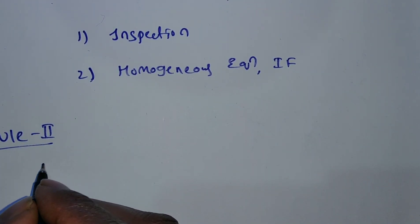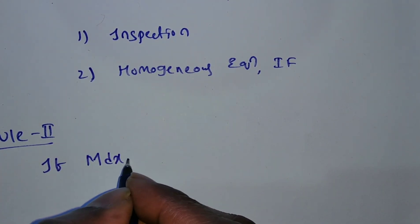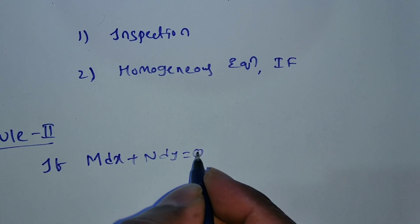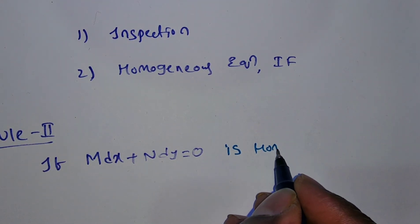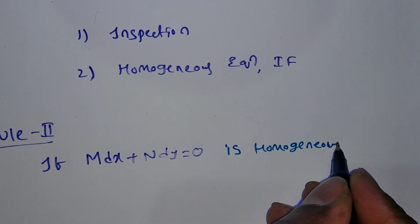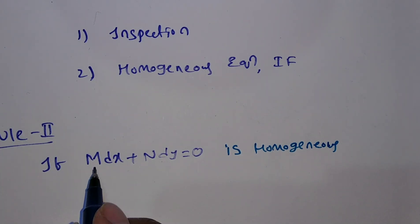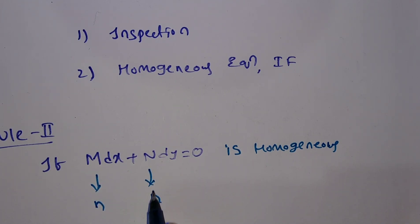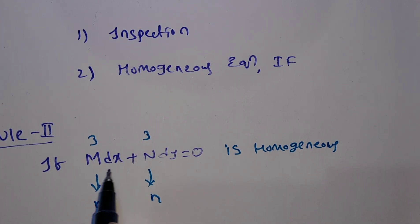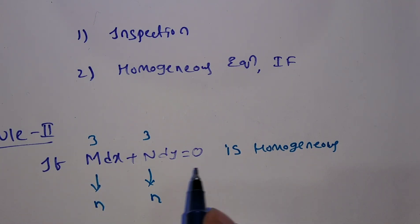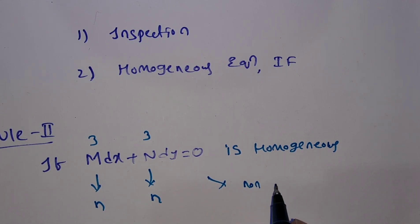Rule 2. If the given differential equation M dx + N dy = 0 is homogeneous — homogeneous means M is a homogeneous function of degree n, and N is also a homogeneous function of the same degree — then the equation is called a homogeneous differential equation. If it is non-exact, we have to make it exact.